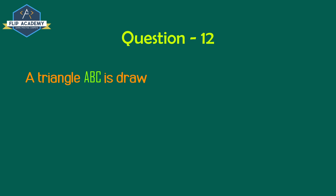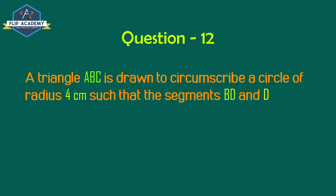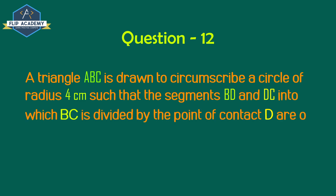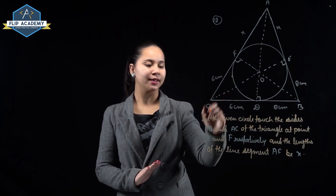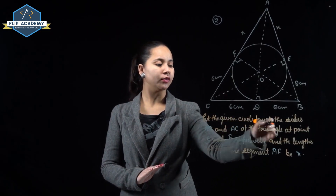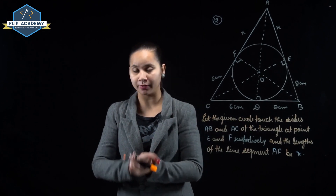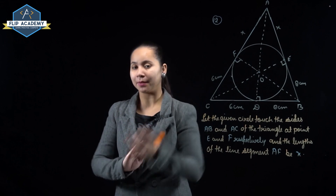A triangle ABC is drawn to circumscribe a circle of radius 4 cm such that the segments BD and DC into which BC is divided by the point of contact D have lengths 8 cm and 6 cm respectively. Find the sides AB and AC. Let the given circle touch the sides AB and AC of the triangle at points E and F respectively.